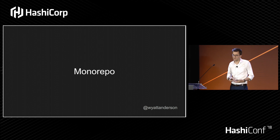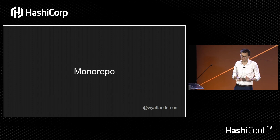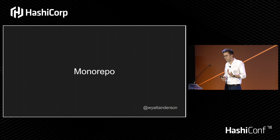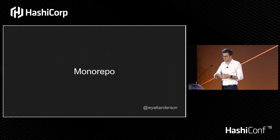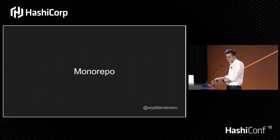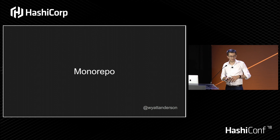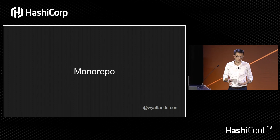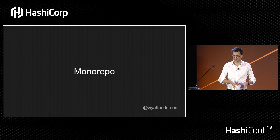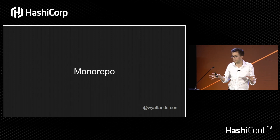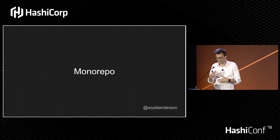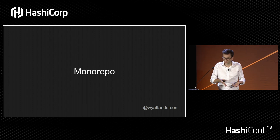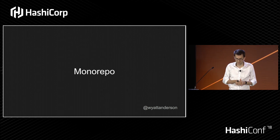We took a different track and adopted what's called a monorepo. Monorepos became popular at Google and Facebook and a lot of other companies with a lot of time and money to invest in tooling. In a monorepo, you organize all of your application code in one giant repository. It's not for everybody, but we've made an investment in it and it's worked out well for us.